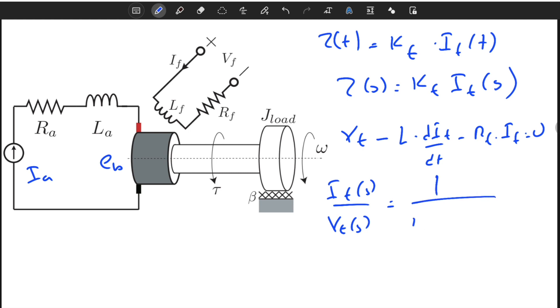If we find the transfer function from i_f(s) divided by v_f(s), we will simplify that it's equal to 1 over L_f*s plus R_f. This is the transfer function from input voltage to the output current.